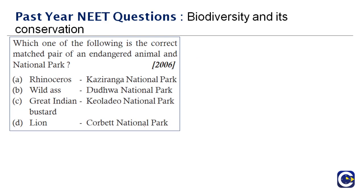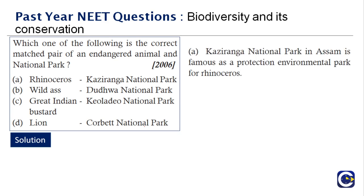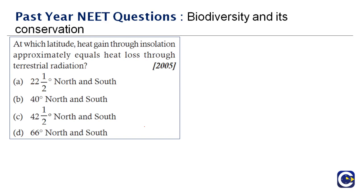Next question: which one of the following is the correctly matched pair of an endangered animal and its national park? The options include rhinoceros, wild ass, great Indian bustard, and lion. The correctly matched pair is option A — rhinoceros with Kaziranga National Park, which is located in Assam and is famous as a protected area exclusively for rhinoceros.